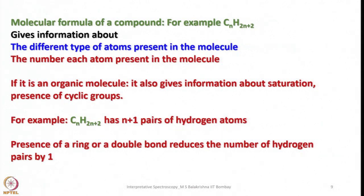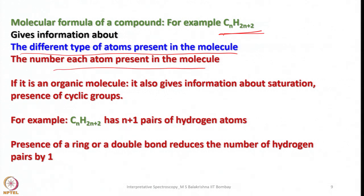Now let us look at the information we can get from mass spectra. For example, if we have a simple hydrocarbon like CnH2n+2, the different types of atoms present in the molecule can be directly obtained from the molecular formula, along with the number of each atom. For organic molecules, it also gives information about saturation, unsaturation, presence of cyclic groups, and other functional groups. CnH2n+2 has n+1 pairs of hydrogen atoms.